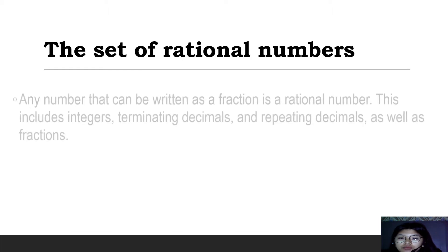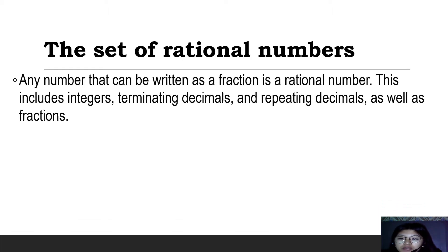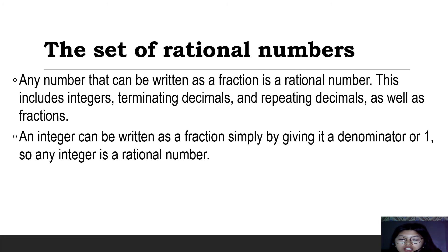The set of rational numbers. Any number that can be written as a fraction is a rational number. This includes integers, terminating decimals, and repeating decimals, as well as fractions. An integer can be written as a fraction simply by giving it a denominator of 1.